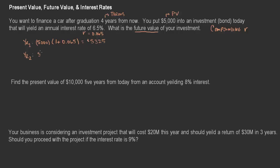So in year two, you now have $5,325, and you earn 1.065 on that as well. Taking $5,325 times 1.065 gives us $5,671.13. You can see the pattern: it's the present value times one plus the interest rate, raised to the number of years. For example, year two could be written as $5,000 times 1.065 squared — 1.065 times 1.065 — and that gives you the exact same amount.